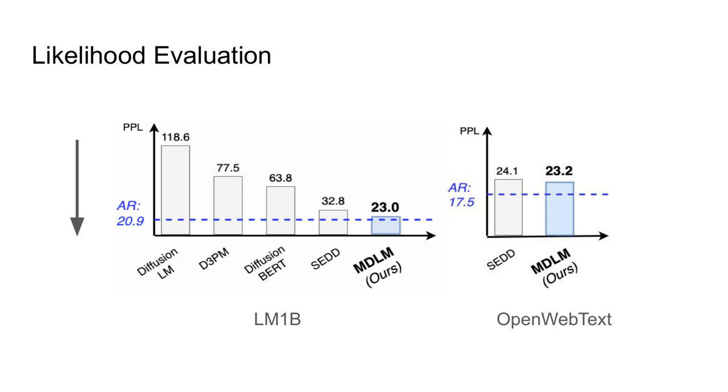The core results are on the LM1B data set when comparing log likelihood. We see that our model gets to a perplexity of 23, nearing the autoregressive perplexity of 20.9. We also see that on open web text, we're able to get to 23.2, nearing the autoregressive perplexity of 17.5.